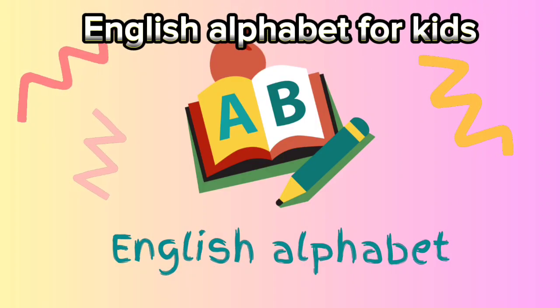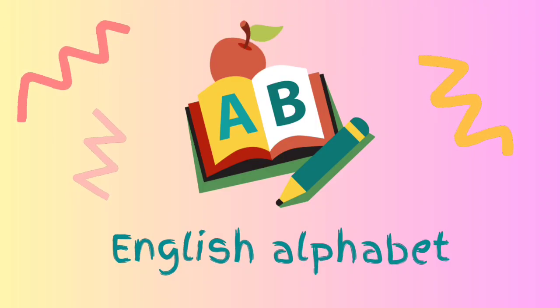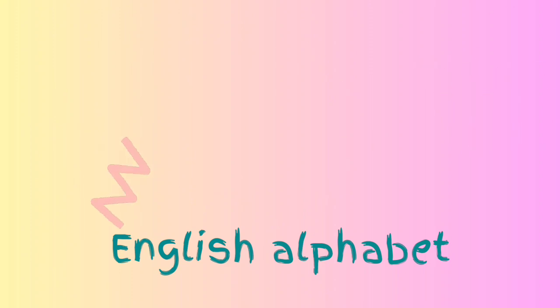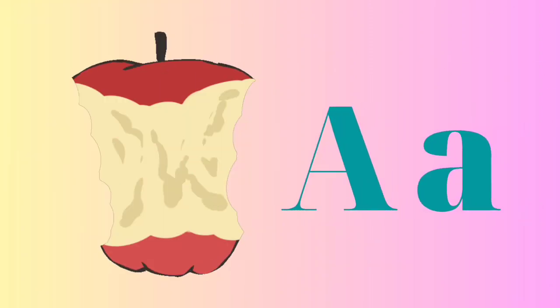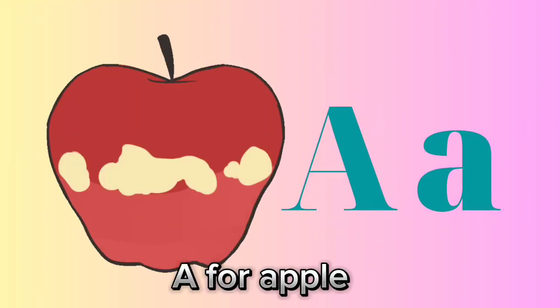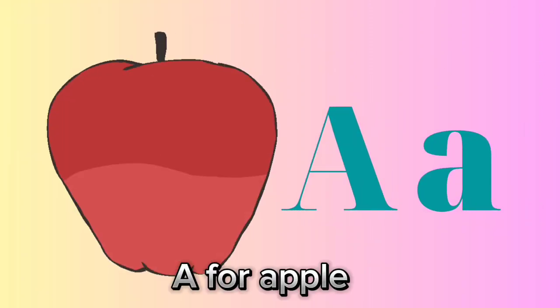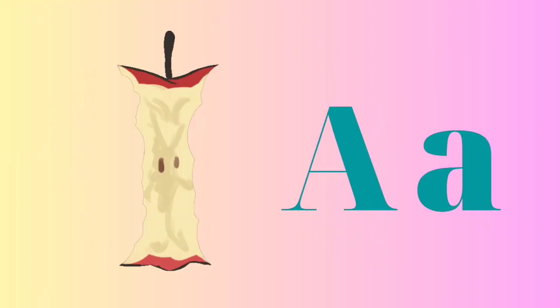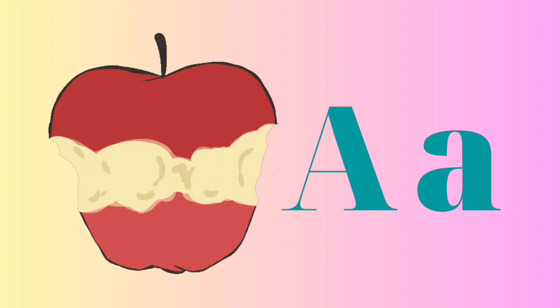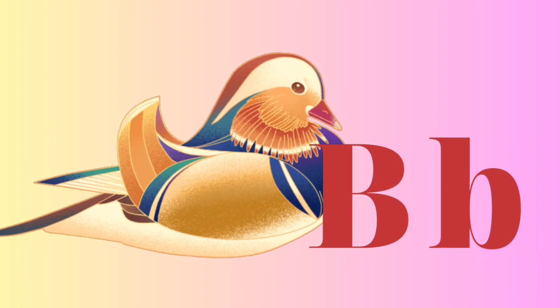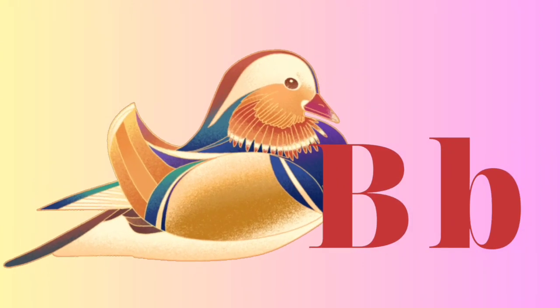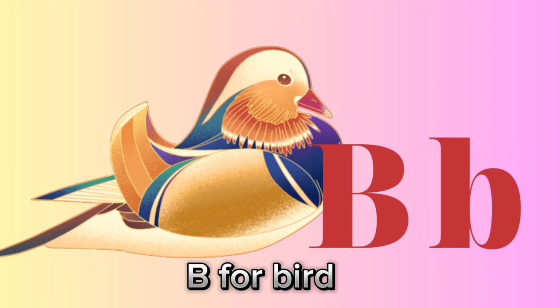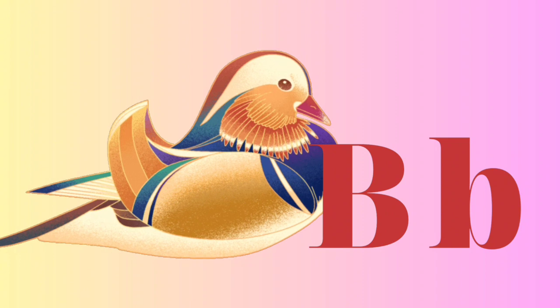English alphabet for kids. A for apple. B for bird.